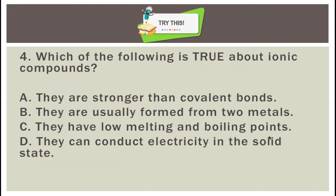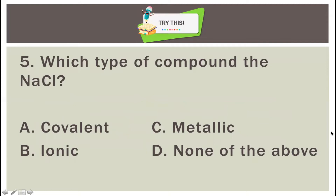Which of the following is true about ionic compounds? A: they are stronger than covalent bonds; B: they are usually formed from two metals; C: they have low melting and boiling points; D: they can conduct electricity in a solid state. Number five — which type of compound is sodium chloride or NaCl? A: covalent; B: ionic; C: metallic; D: none of the above.